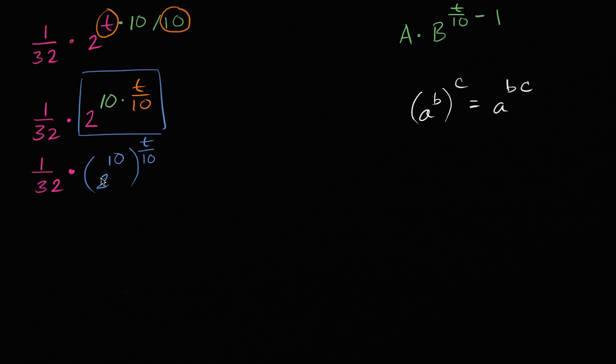So let's see, what's 2 to the 10th power? Actually, let's just keep it as 2 to the 10th power, just for simplicity right now. Later we can, you might know that that's going to be 1024. But let's see what else we can do. So we know this is going to be, actually let me just write it as 1024. So we have 1 over 32 times 1024 to the t over 10 power.